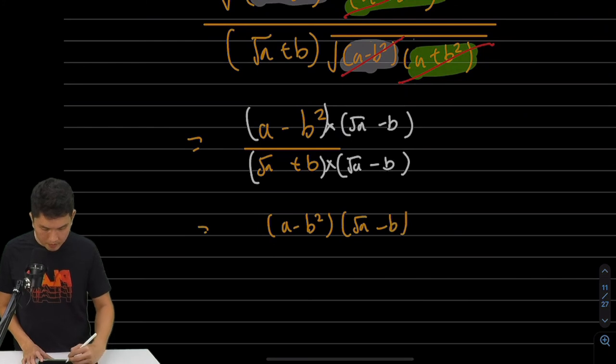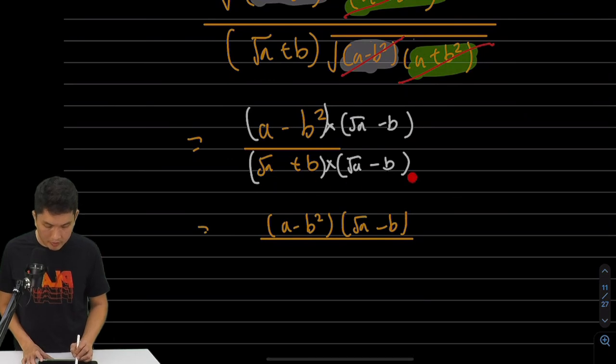Times root A minus B. And for the bottom, you can see when we multiply by the conjugates, it's just a A plus B, A minus B thing again. Then I'll get root A square minus B square.